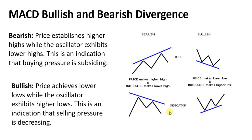Looking at bearish divergence on the chart: you see the price is achieving higher highs — going higher and higher — but the indicator is making lower highs, getting lower and lower. This is called bearish divergence. What it is showing us is that the buyers are getting weaker — even though the price is still going up, the indicator is saying it's getting weaker. Get ready for a reversal.